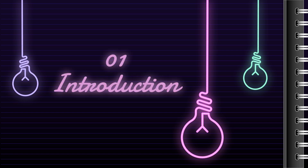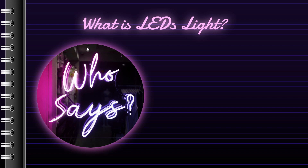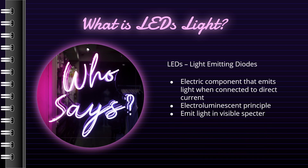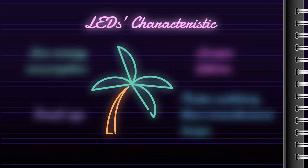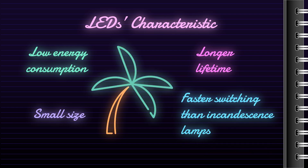Let's start with the introduction. Did you know what LED lights are? LED is an acronym for light emitting diodes. A light emitting diode is an electric component that emits light when connected to direct current. It works on the electroluminescent principle and can emit light in the visible spectrum as well as in infrared and ultraviolet. LED have characteristically low energy consumption, small size, longer lifetime, and faster switching than incandescent lamps, and because of that they have a wide palette of applicability.